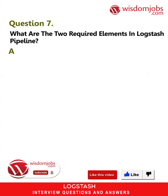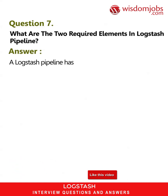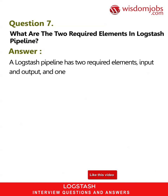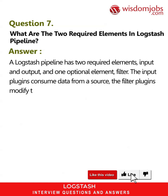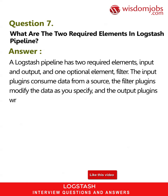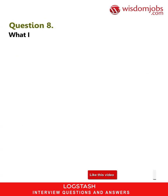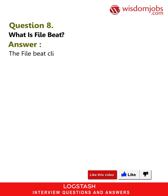Question 7: What are the two required elements in a Logstash pipeline? Answer: A Logstash pipeline has two required elements — input and output — and one optional element: filter. The input plugins consume data from a source, the filter plugins modify the data as you specify, and the output plugins write the data to a destination.